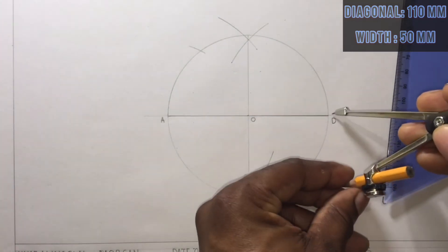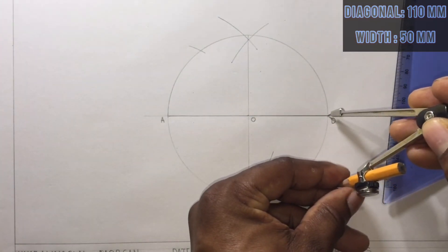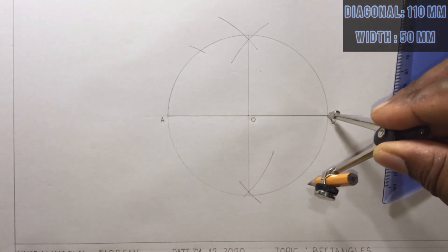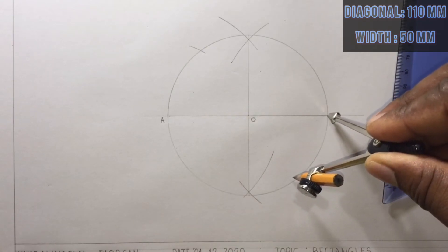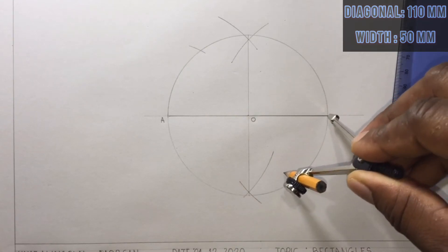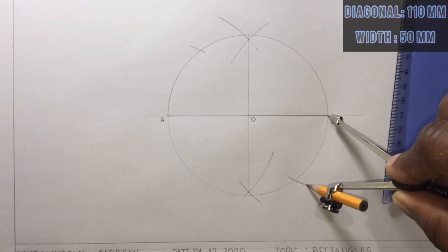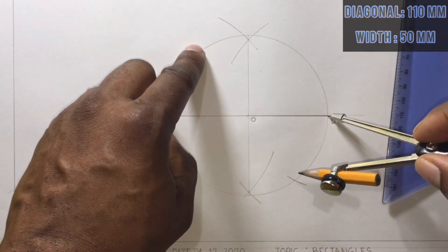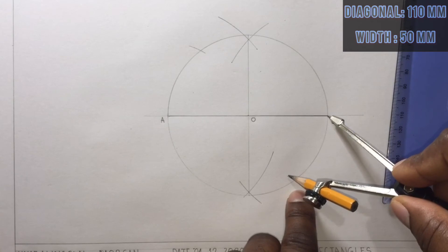I will also place my compass at point D and swing an arc to cut the line, which will give me point B. So this gave me point C and this is now giving me point B.